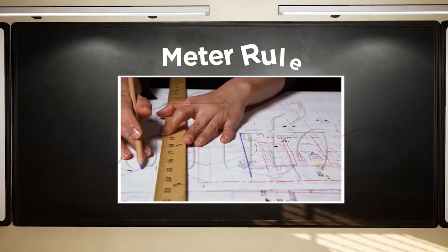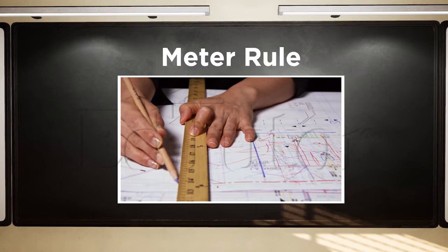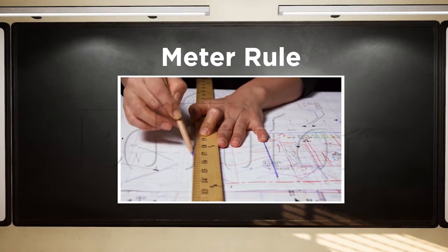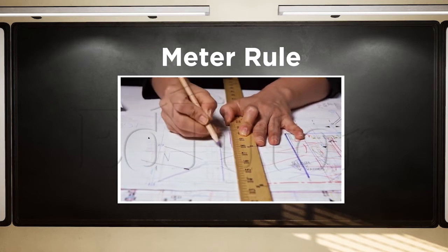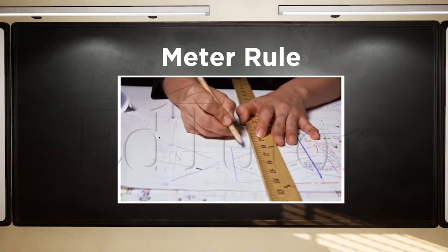Another instrument for measuring length is the meter rule. The meter rule can be used for measuring shorter distances or shorter lengths. You can see these meter rules in the lab.